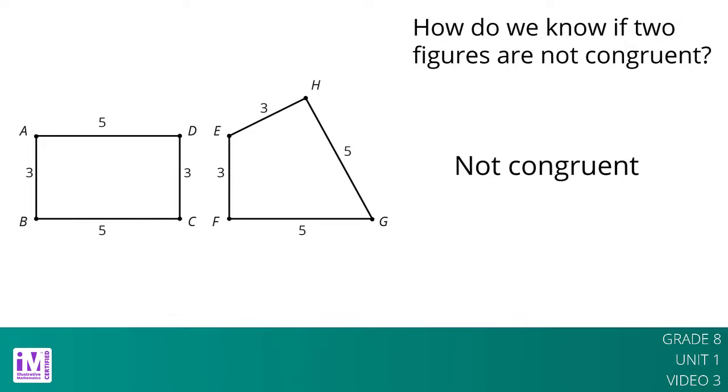In ABCD, the order is 3535 or 5353. In EFGH, no matter how we say the side lengths around the polygon, they don't match the order of ABCD.